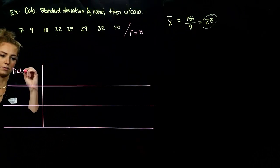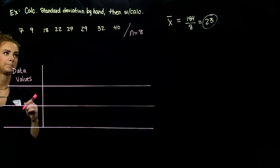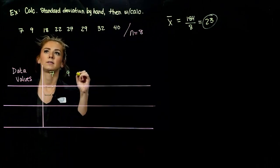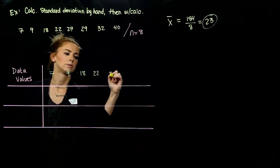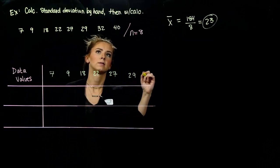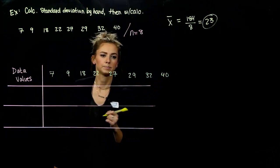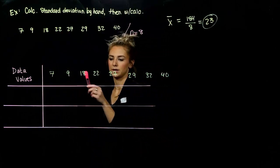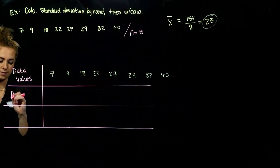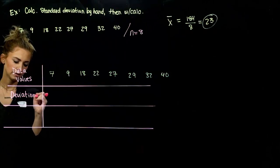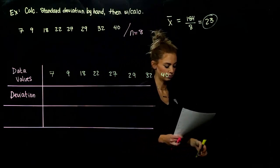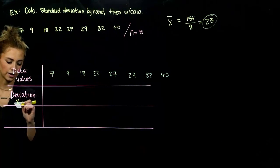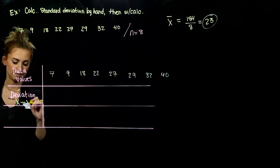First thing to look at: what are the data values that are present? We had 8 to work with: 7, 9, 18, 22, 27, 29, 32, and 40. We have the mean, and we have to figure out how far away from the mean each of these data points is — we want to know what the deviation is. How do we get the deviation? We take our data value x and subtract our mean, x-bar.